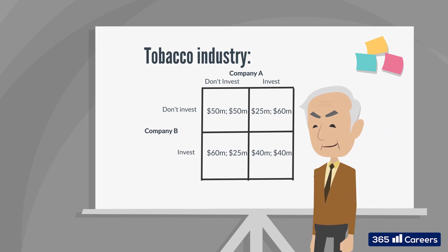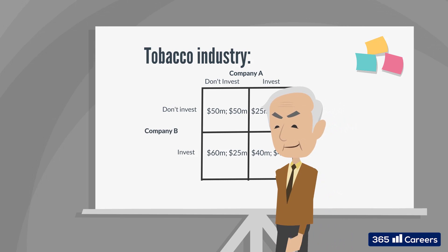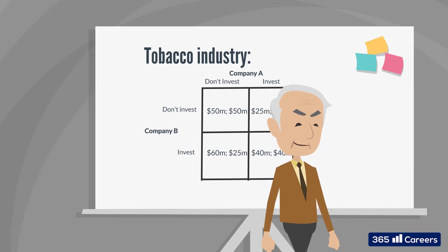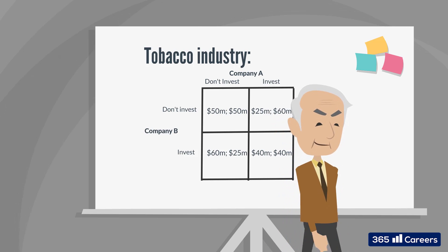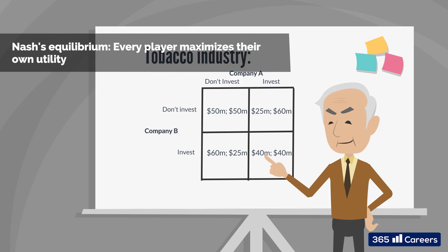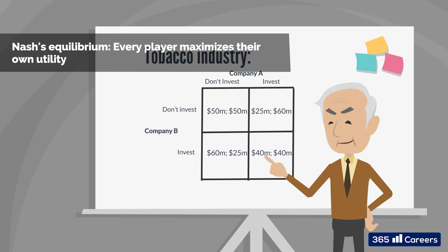This is a great illustration of what happened in reality before the government's ban on TV ads. The dilemma faced by the two tobacco companies was very similar to the prisoner's dilemma. Both players are better off if they cooperate. However, they cannot be certain the other party will adhere, so they opt for a solution that guarantees the best possible outcome in all states of the world. Nash's equilibrium indicates companies will choose to advertise, and that's precisely what happened in practice — each player maximized their own utility, resulting in the situation we observed in real life.